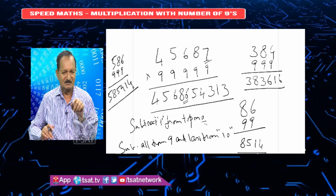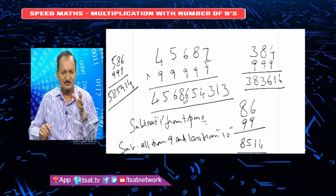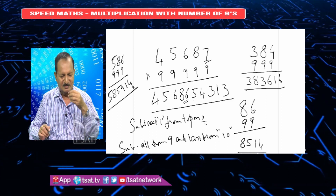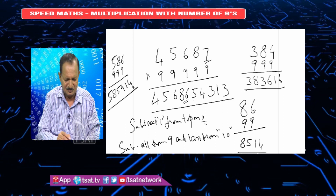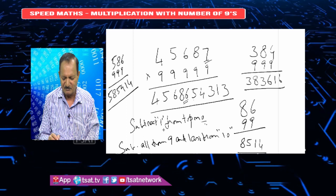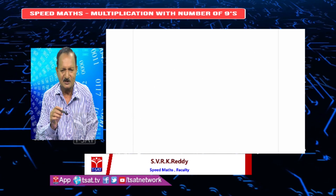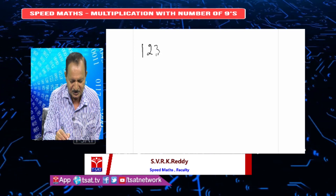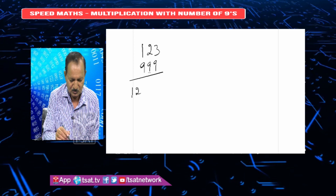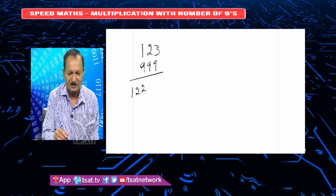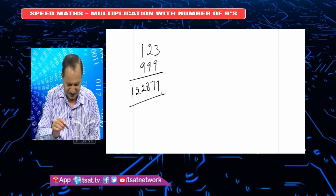Now let us prove it. We will try everything in Speed Math and everything will be proved. I will say that: subtract 1 from the top number, subtract all from 9 and last from 10. Let us prove it with 123 into 999. According to Speed Math, 123 minus 1 is 122, then 9 minus 1 is 8, 9 minus 2 is 7, and 10 minus 3 is 7. So the answer in Speed Math is 122877.